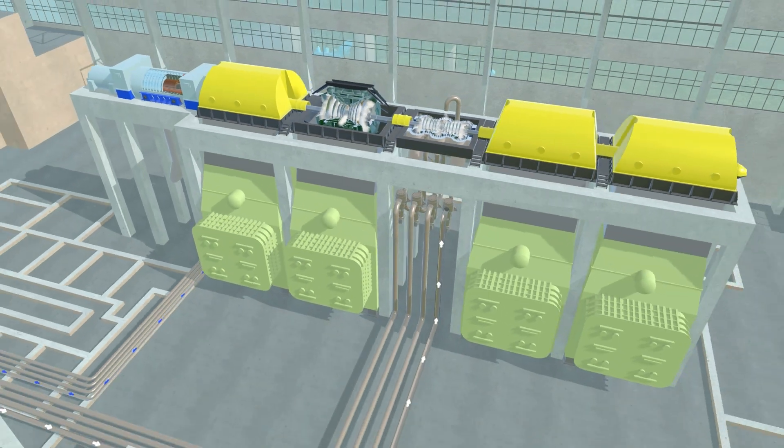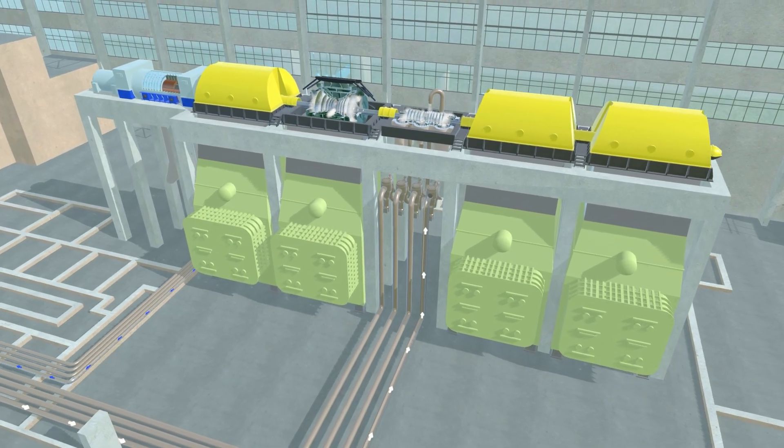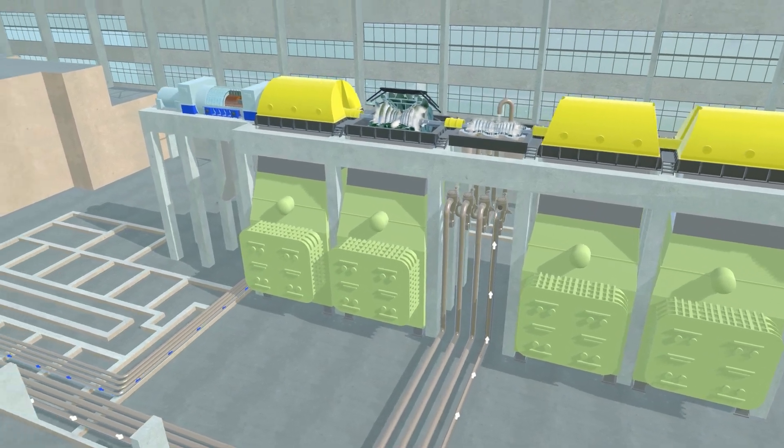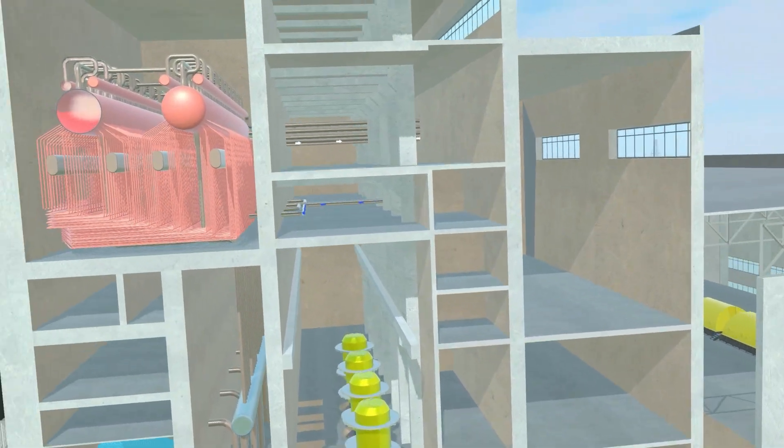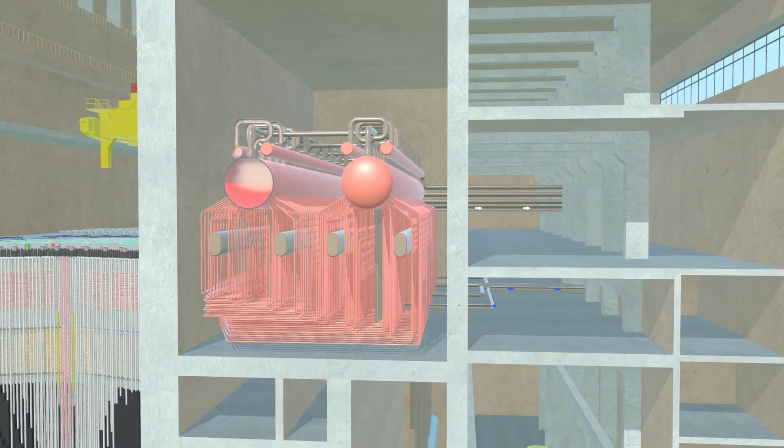The steam condenses in the condenser below the turbine and is transported back to the bottom of the separation drums as feed water after regenerative heating and degassing by pumps.